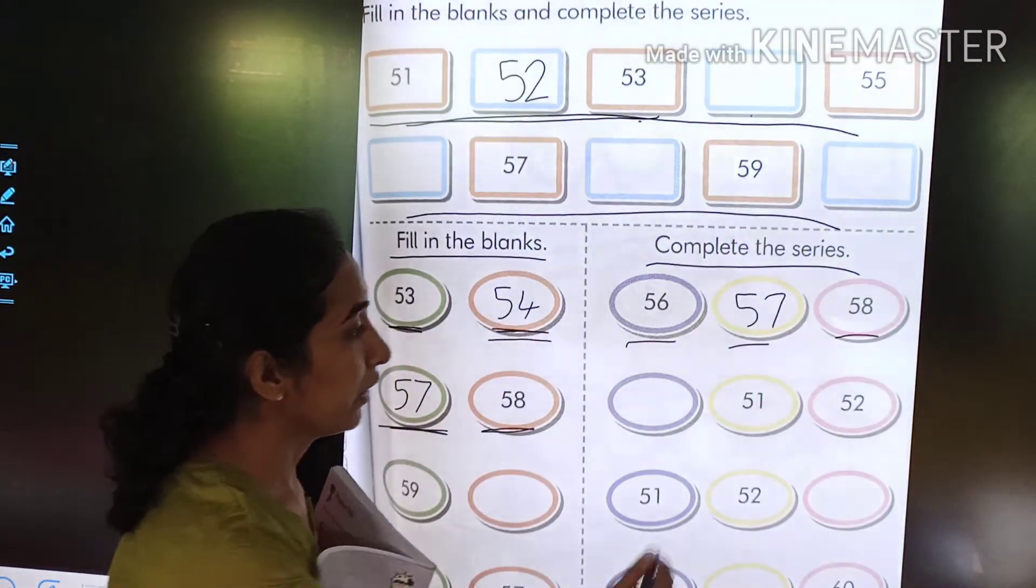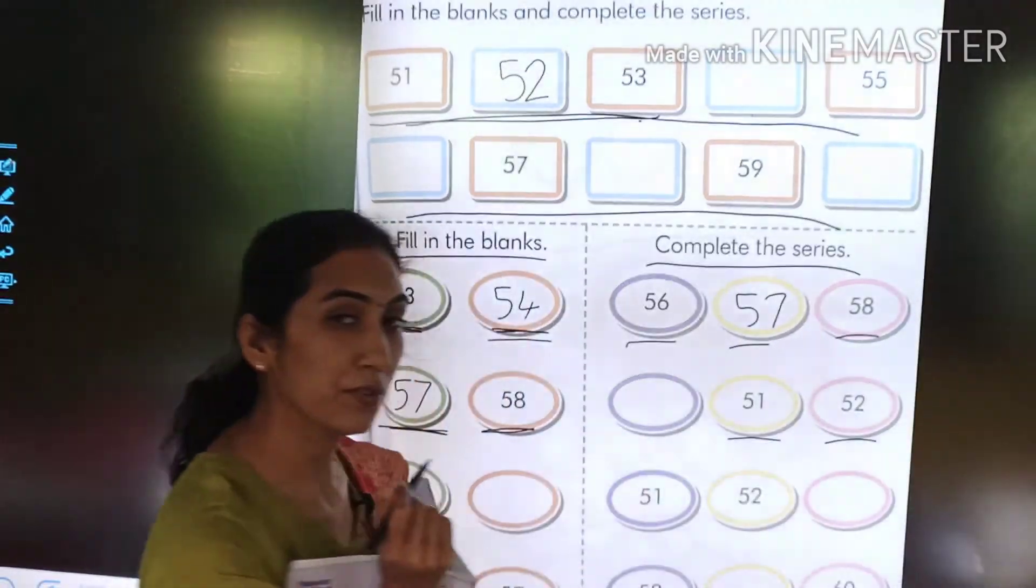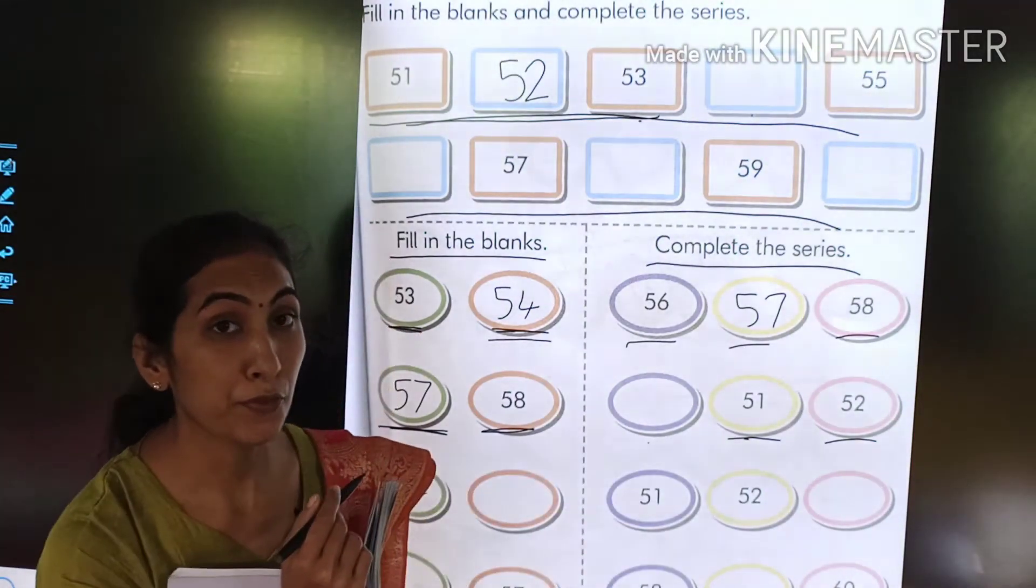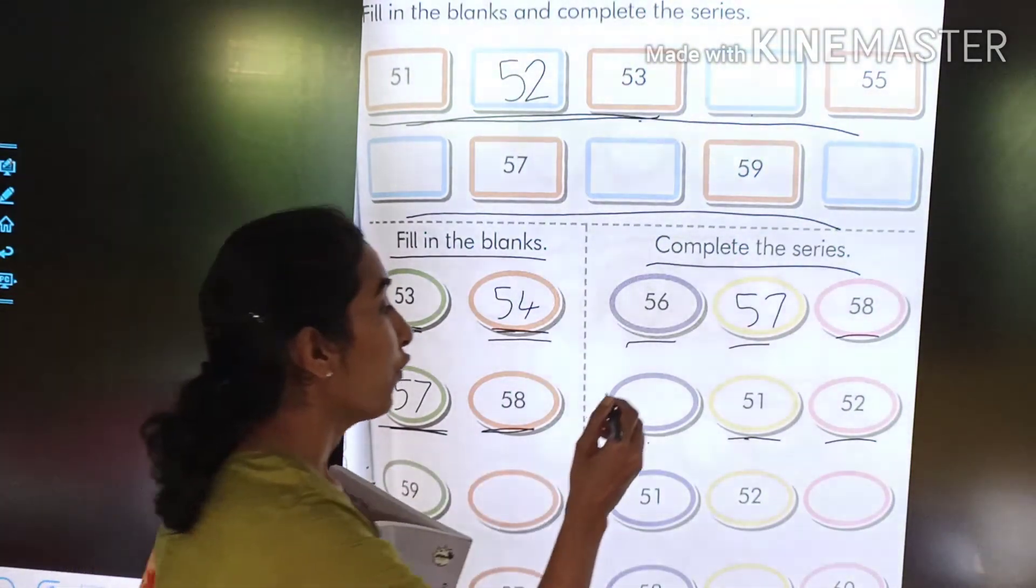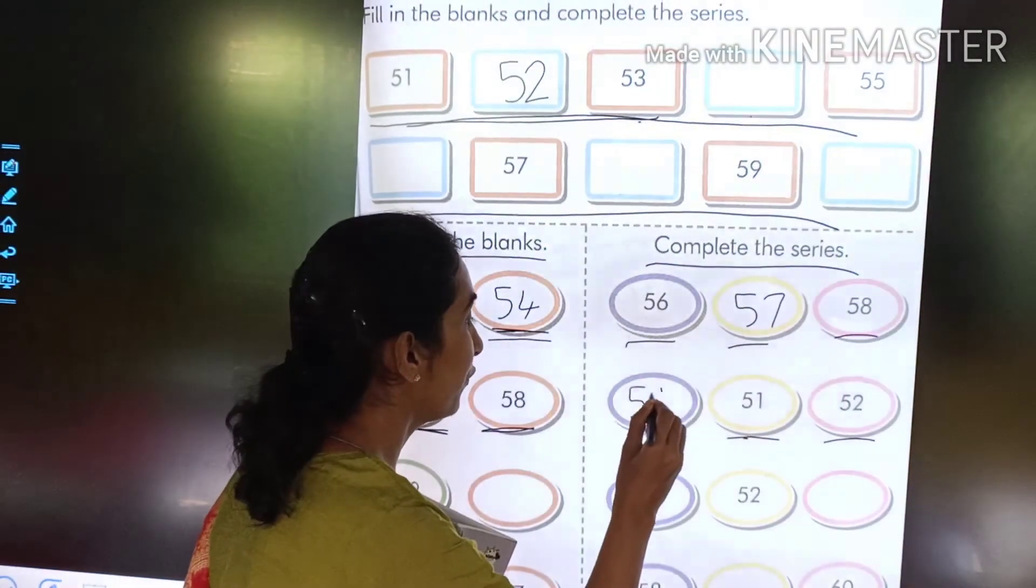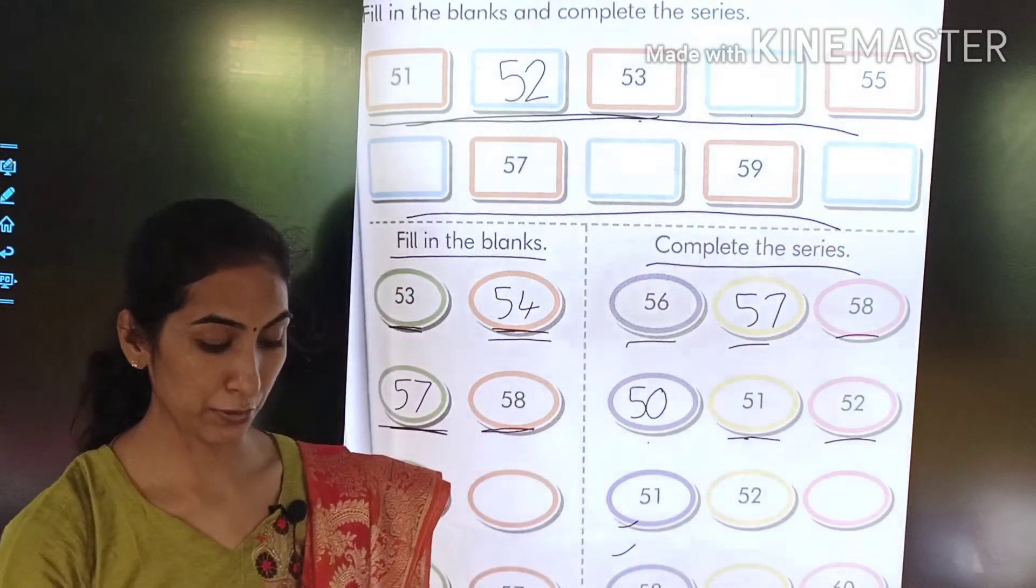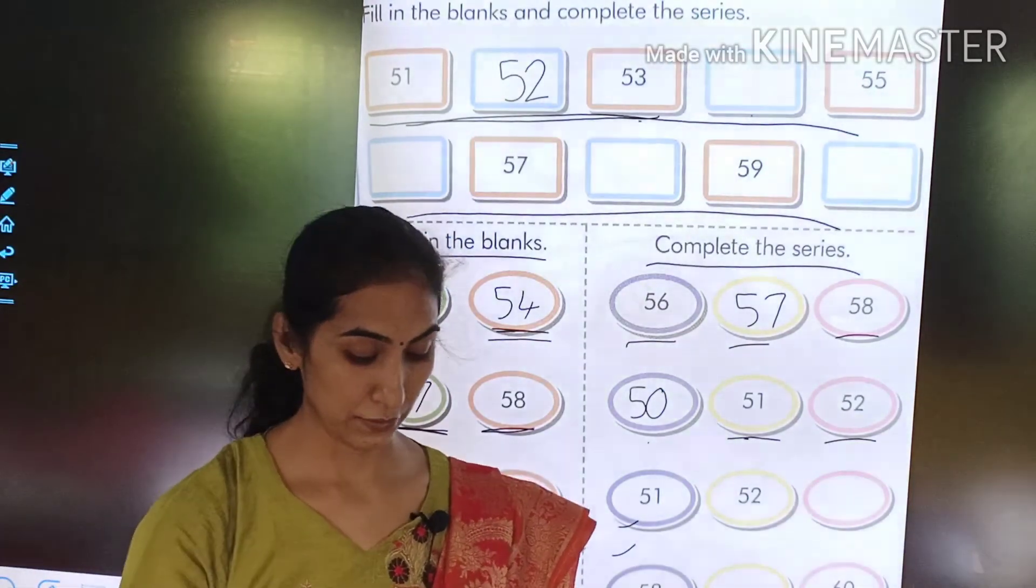57. After 57 will come 58. Now 51 and 52 are given. So before 51, what will come? 50. The same way this code you have to do by yourself.